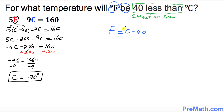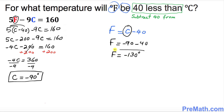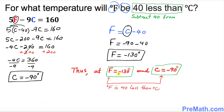Now we're going to plug C equal to negative 90 degrees back in. So F equal to negative 90 minus 40, which means F turns out to be negative 130 degrees. Thus, at F equal to negative 130 degrees and C equal to negative 90 degrees, F is 40 less than degrees Celsius.